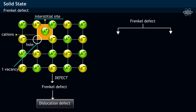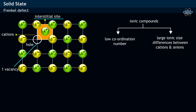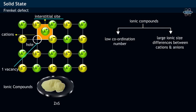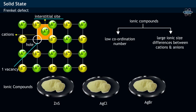Frenkel defects are common among ionic compounds with low coordination number and in crystals having large ionic size differences between cations and anions. Ionic compounds such as zinc sulfide, silver chloride, and silver bromide show Frenkel defect.